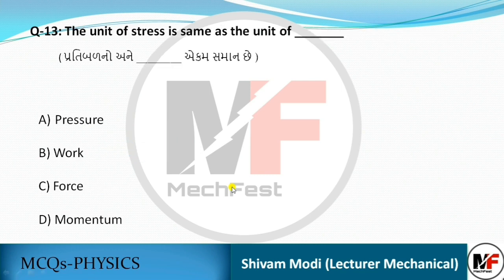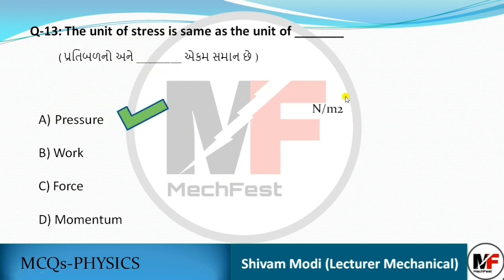The unit of stress is the same as the unit of which quantity? The unit of stress is Newton per meter square. Similarly, pressure also has the unit Newton per meter square — so they share the same unit. Work (Joule), force (kg·m/s²), and momentum (mass × velocity) have different units. So the answer is pressure.